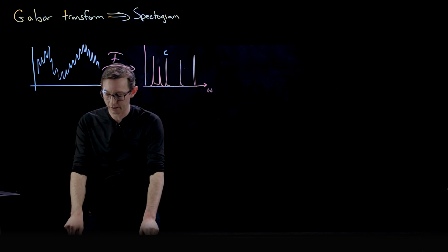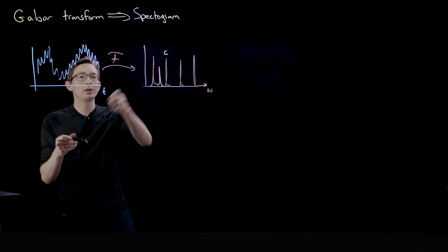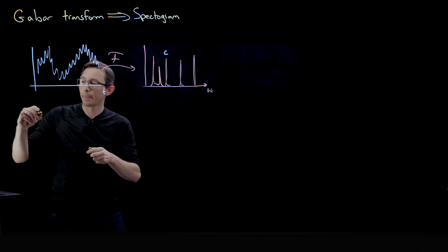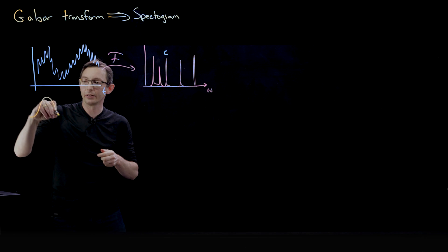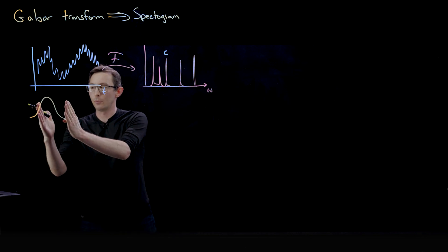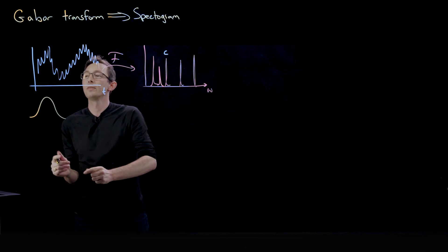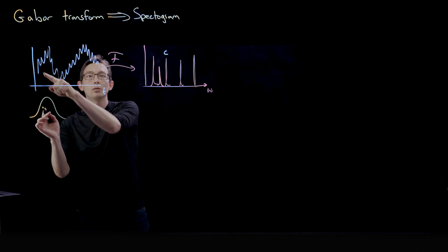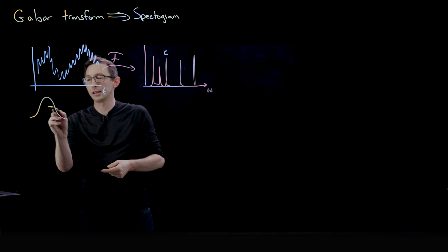And so what we do in the Gabor transform is instead of computing the Fourier transform over the entire temporal domain, what we do is we take a little Gaussian window, some fixed width window, and we convolve our Fourier transform with this little Gaussian window sliding across our signal.